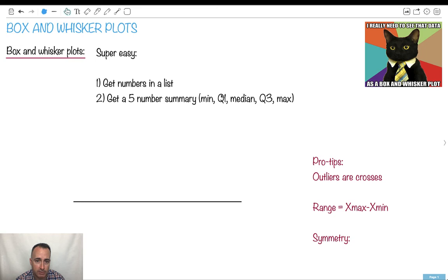So I found the minimum, the Q1, that's the first quartile, the median, the third quartile, and the maximum.